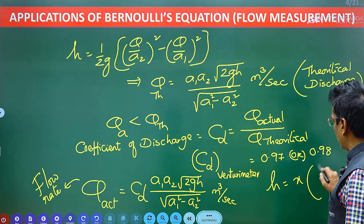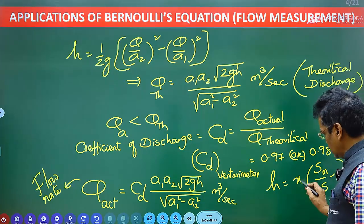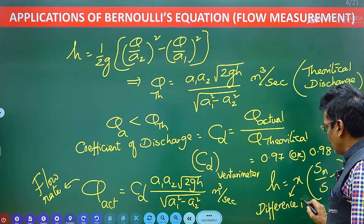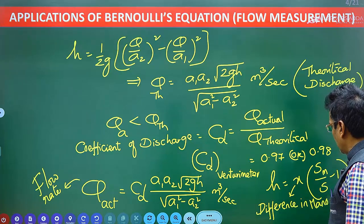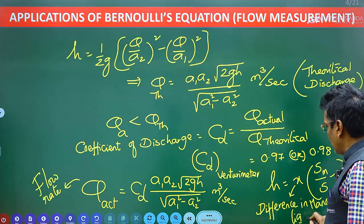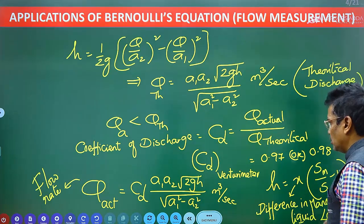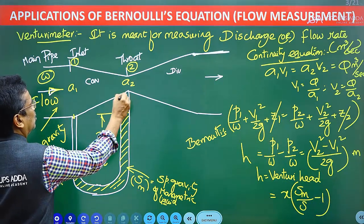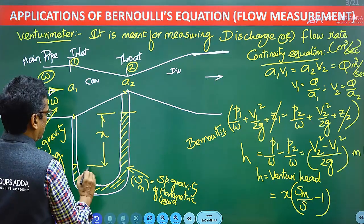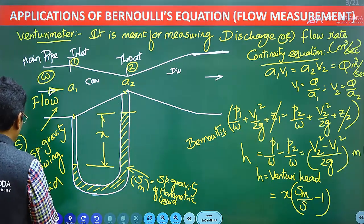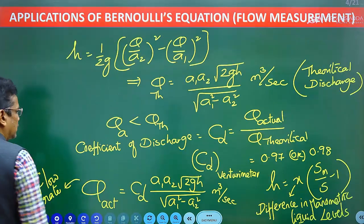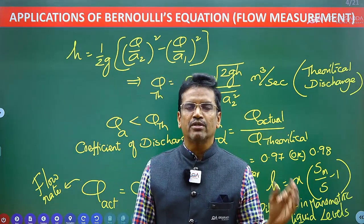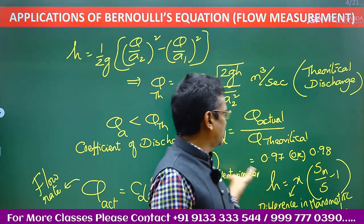The manometric level difference is X, and the Venturi head H = X × (SM/S − 1), where X is the difference in manometric liquid levels in the U-tube manometer connected between the inlet section and the throat section. The Venturi meter is a very accurate instrument for measuring the flow rate, volume flow rate, or discharge in liters per second or meter cube per second. This is one of the important applications of Bernoulli's equation.